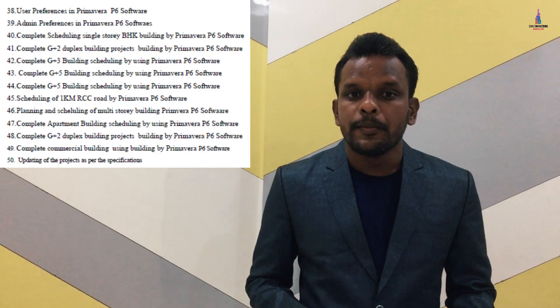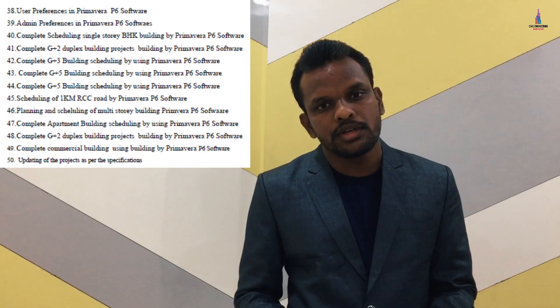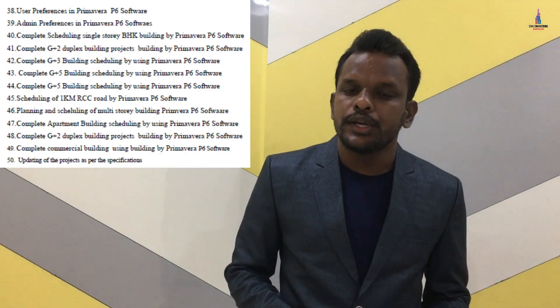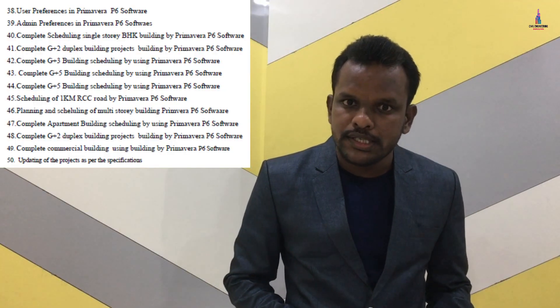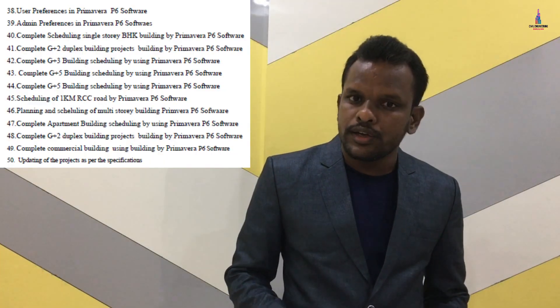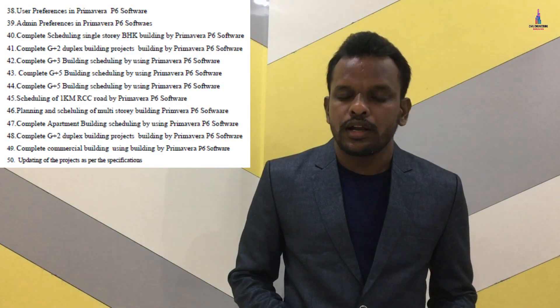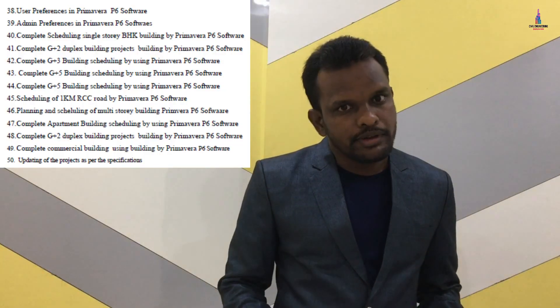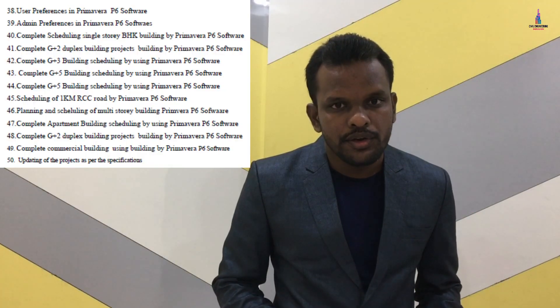That covers all the topics in the Primavera P6 software course. Students who are enrolled can continue from the next lecture on downloading and installation of Primavera P6. For any queries or doubts, you can message on WhatsApp — the number is available in the PDF. After completing the course, message on WhatsApp and I will send the Google Form to obtain your Primavera P6 course certificate. Thank you for watching.